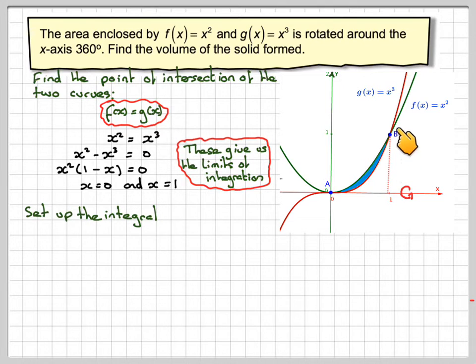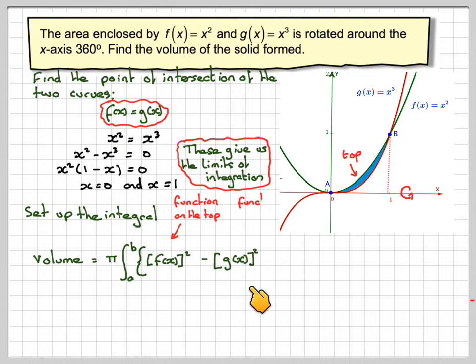We take the top one here. The top one between a and b is going to be x². So the volume will be π times f(x) squared, volume at the top, minus the volume at the bottom squared.